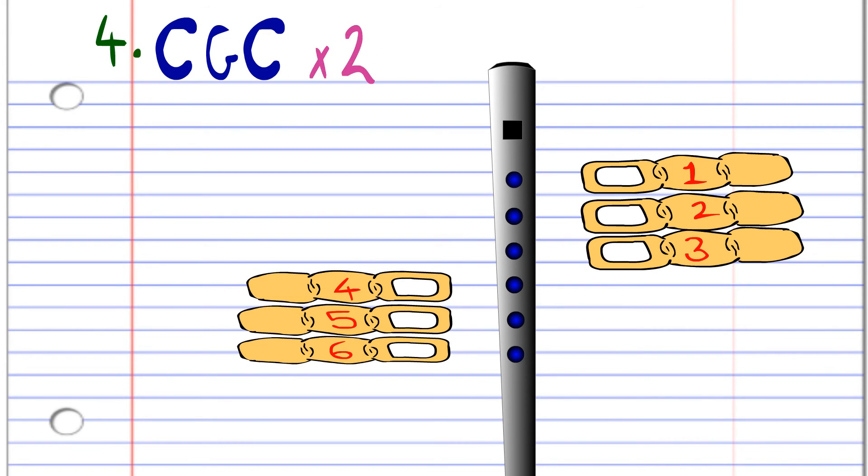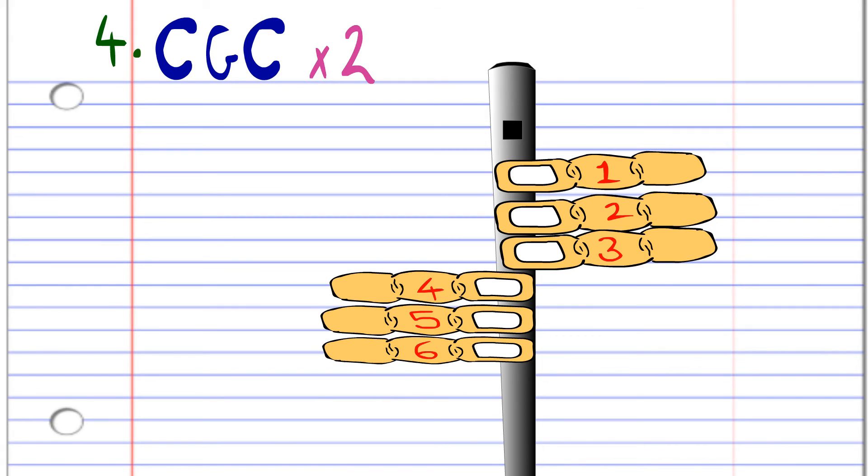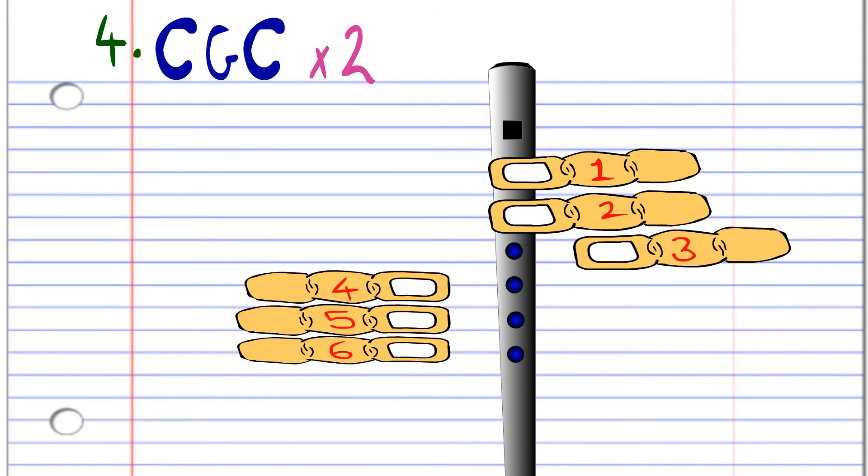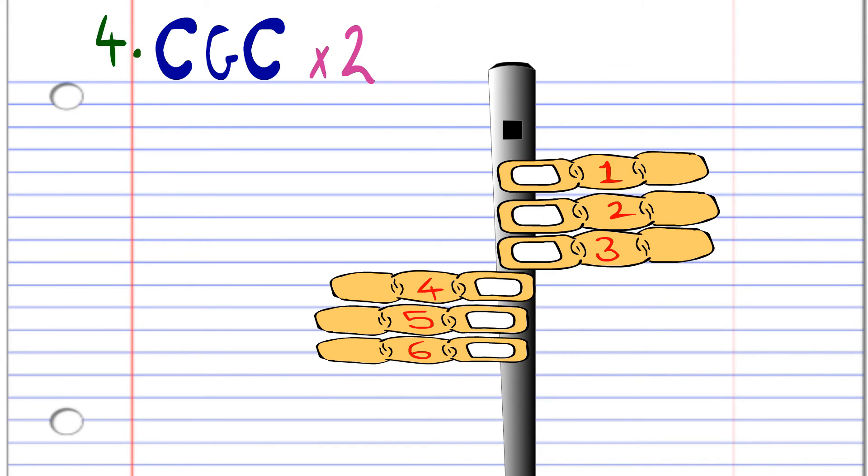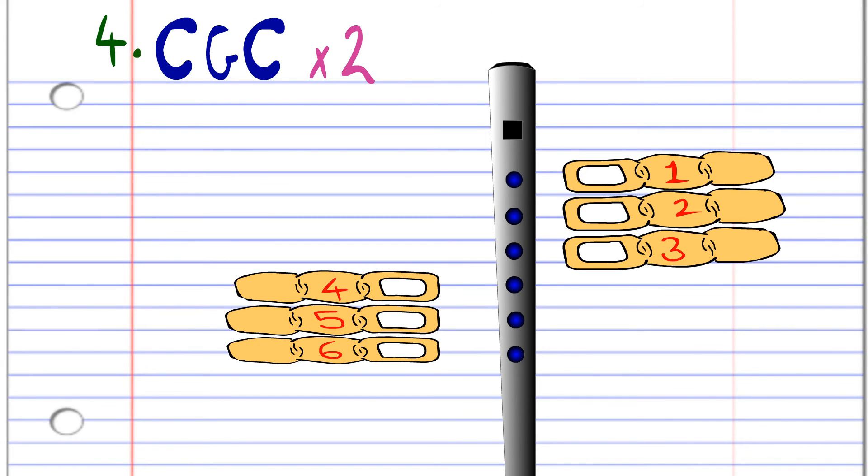For the last phrase, cover holes one to six with fingers one to six and blow once. Cover holes one to two and blow gently once. Cover holes one to six and blow once. Repeat this phrase once. After some practice, put all the phrases together and it will sound like this.